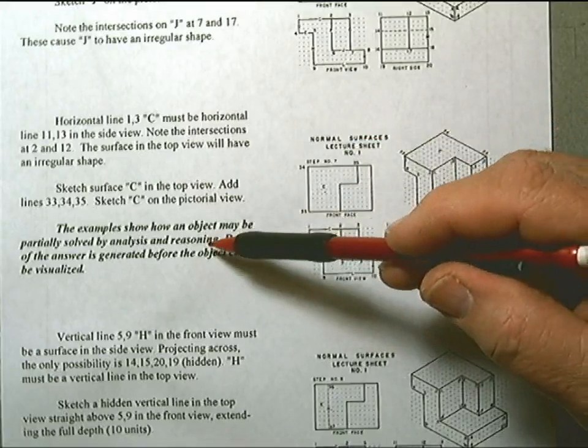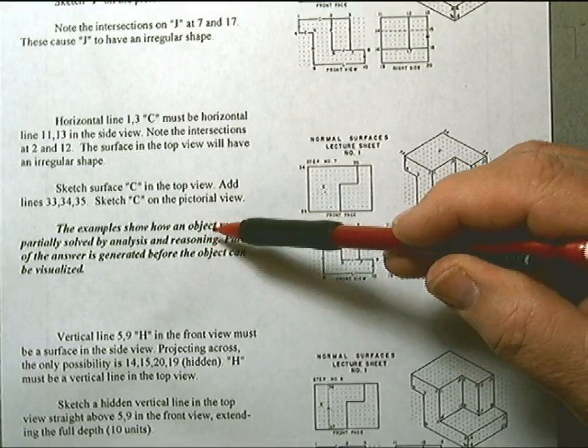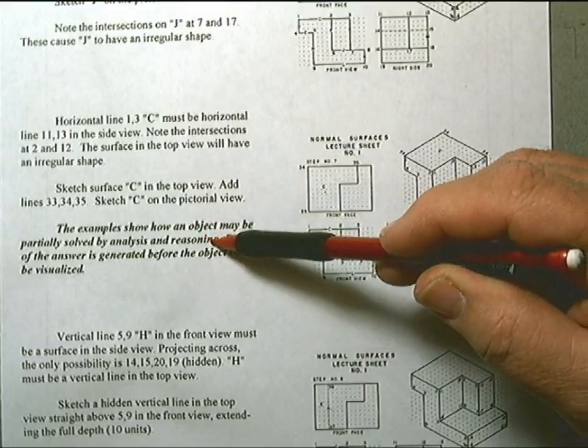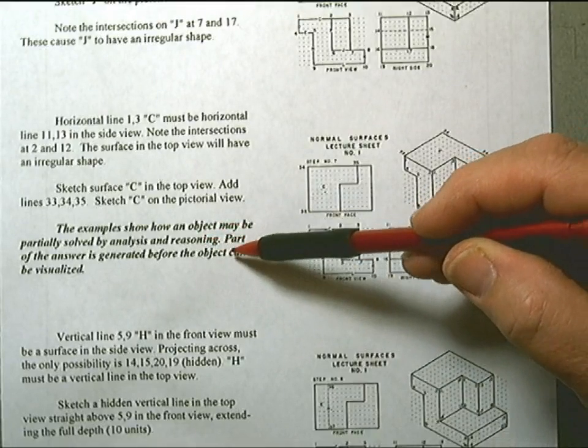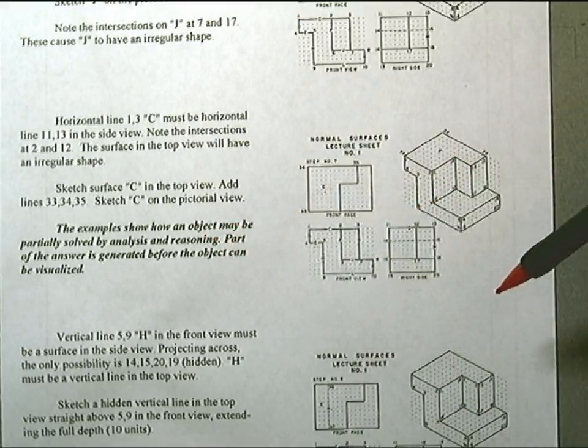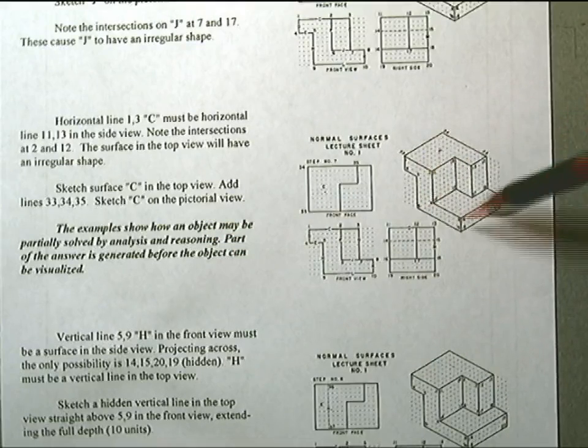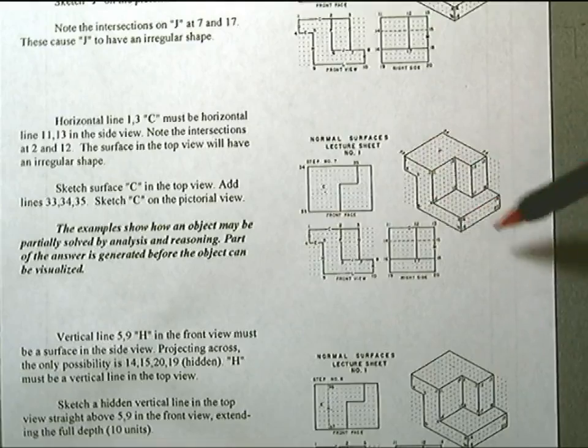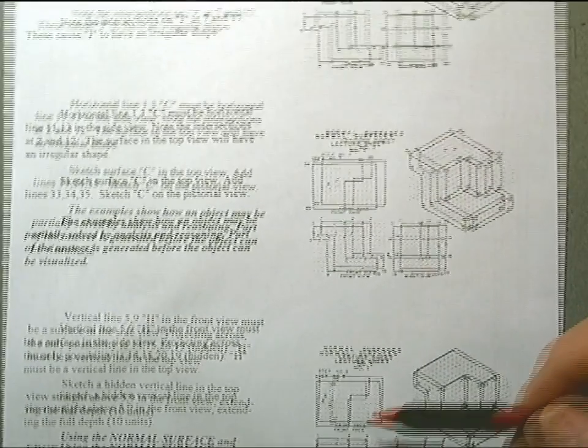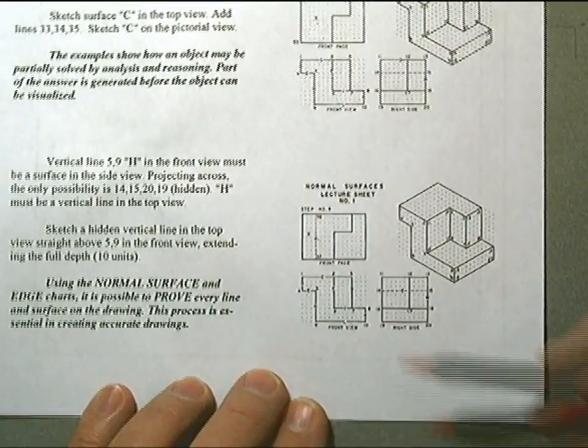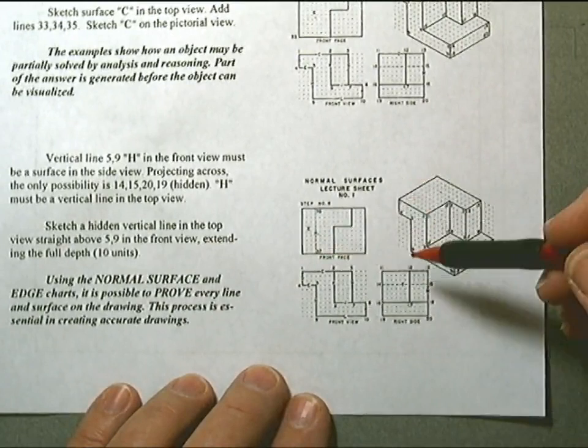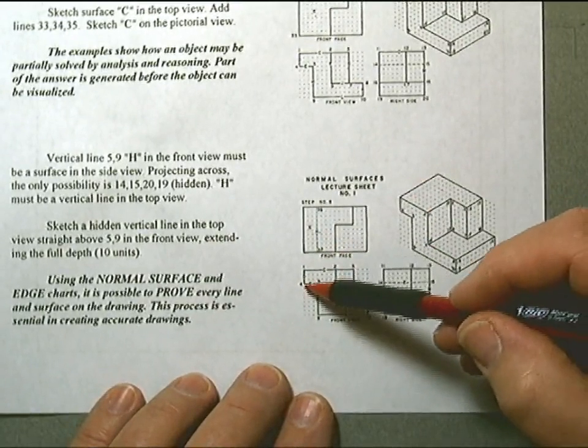As he states here, these examples show how an object may be partially solved by analysis and reasoning. Part of the answer is generated before the object can be visualized. We're really complete at this point in the pictorial, but to finish out our multi-view drawing or orthographic, we have to further analyze the surfaces we have generated or that we see in our given views.